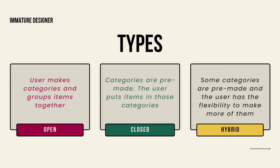Next is closed card sorting. In this process, some categories are pre-made by you, and the user is asked to place all the sticky notes into those pre-made categories. The user may feel that some extra categories are needed, but they are not allowed to create them. In closed card sorting, the user just has to place everything inside the pre-made categories without making their own groups.